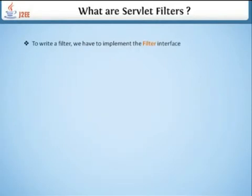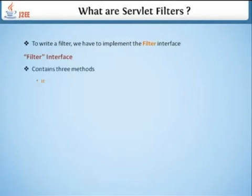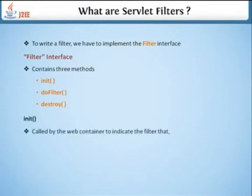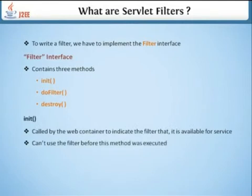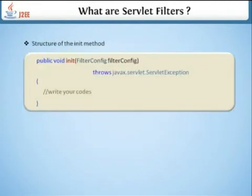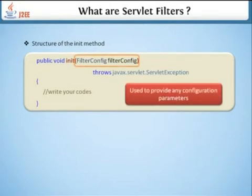To write a filter, we have to implement the Filter interface. The Filter interface contains three methods: init, doFilter, and destroy — similar to the servlet lifecycle. The init method is called by the web container to indicate that the filter is available for service. You cannot use the filter before this method is executed. This is the syntax of the init method.